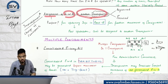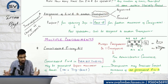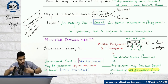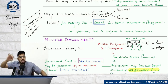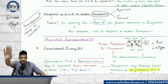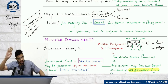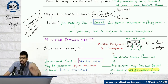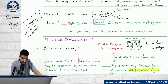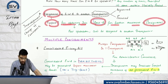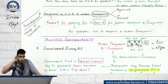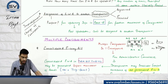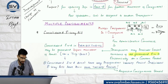Assignment of e-way bill to another transporter: if two transporters are involved in a journey, once the first transporter's leg is done, they assign the e-way bill to the second transporter, say Mr. Ramesh. Ramesh then updates Part B with his details and continues. Post-updation, it cannot be assigned to any other transporter. The transporter can be registered or enrolled.